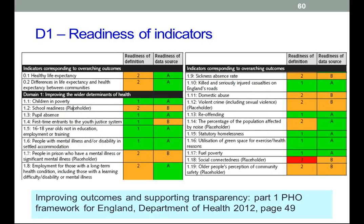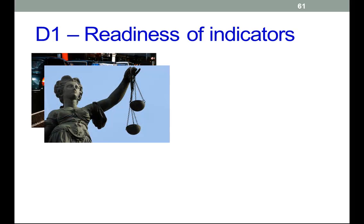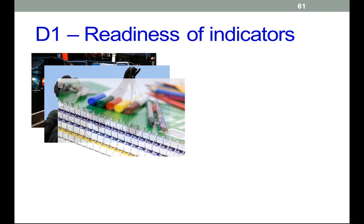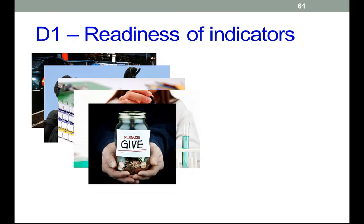The framework notes that local authorities and their partners — including the police, criminal justice system, schools, and presumably universities as well, employers, and business and voluntary sectors — will all have a significant role to play in improving performance against these indicators.